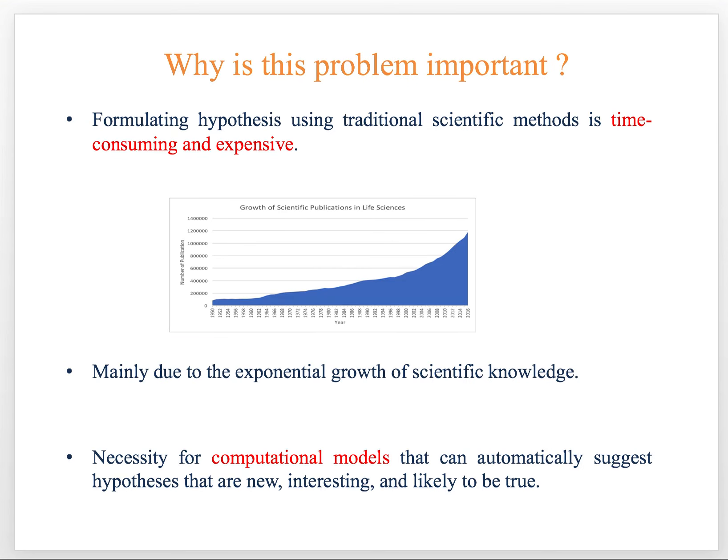So why is this problem of hypothesis generation important? This is because formulating hypothesis using traditional scientific methods is very time-consuming and expensive. This is mainly due to the exponential growth of scientific knowledge, as you can see from this figure. So we need computational models that can automatically suggest hypotheses that are new, interesting, and likely to be true.